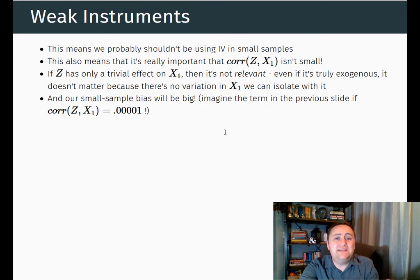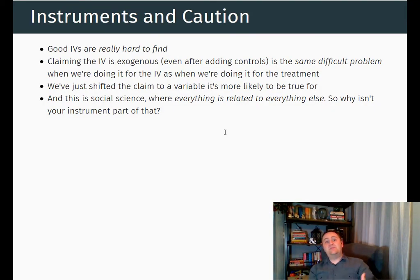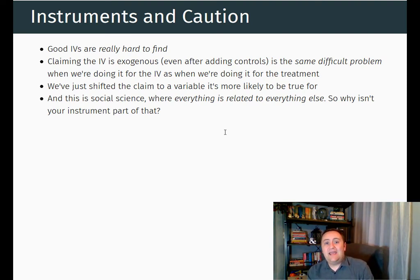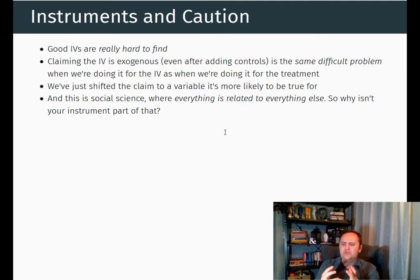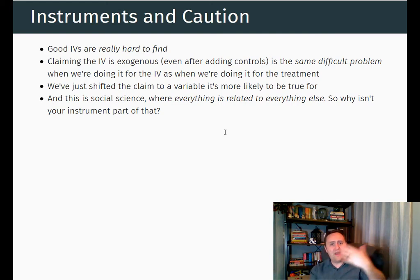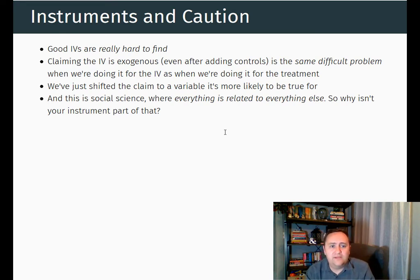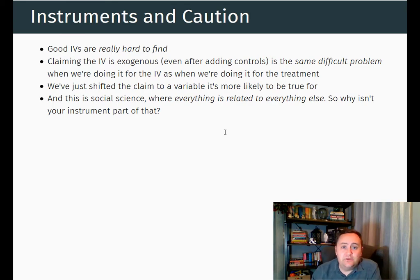One last difficulty is satisfying validity — the assumption that the instrument can only affect the outcome through the treatment; it has to be exogenous after we do controls. This is just really, really hard to do. Good instrumental variables are super hard to find because we need to find a variable that is somehow related to the treatment but basically unrelated to everything else. If you actually have a randomization in the real world — like the birthday lottery — that's probably unrelated to pretty much everything else. But anything actually in the real world is almost certainly going to be related to other stuff, so it's really hard to find an instrument and actually convince people that it works.